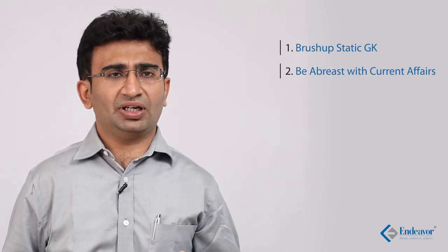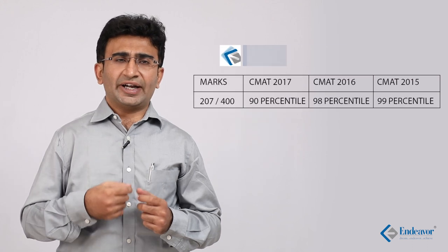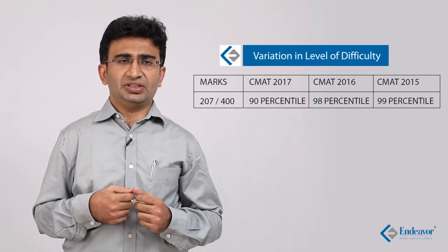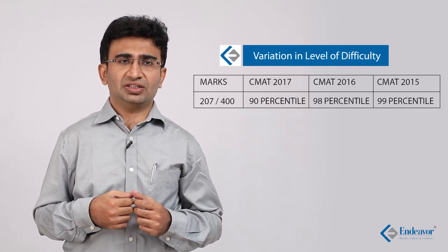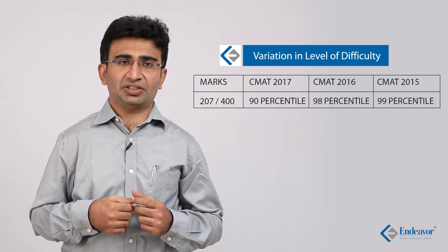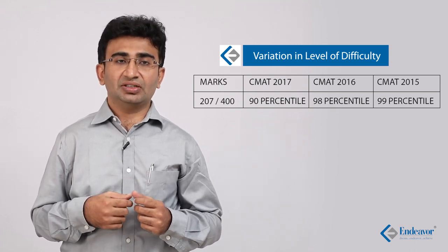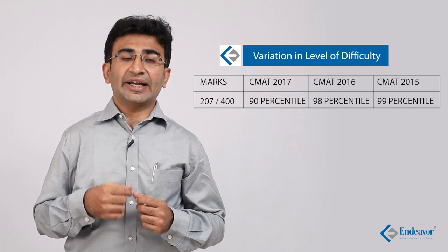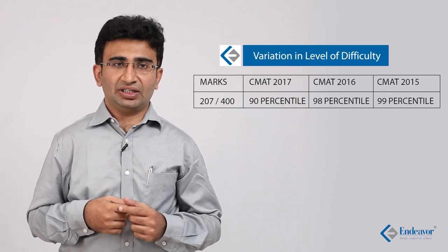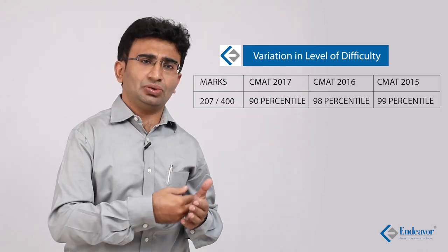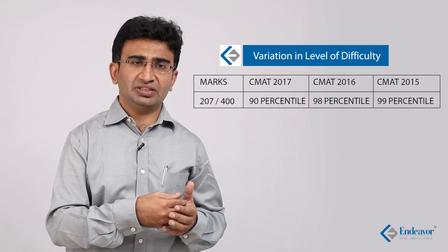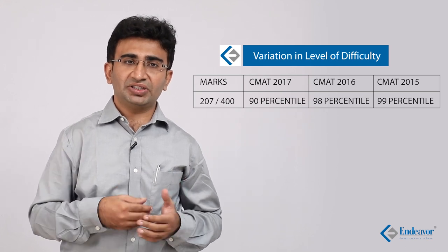Lastly, let us talk about the difficulty level of CMAT. You will get a good idea from these numbers: in CMAT 2017, a score of 207 marks fetched 90 percentile, whereas the same score in CMAT 2016 fetched 98 percentile.